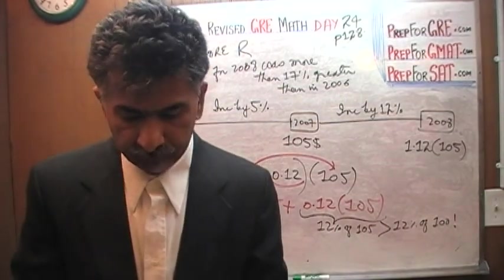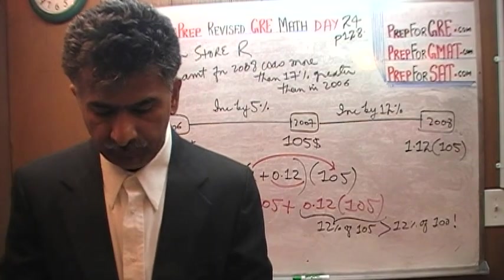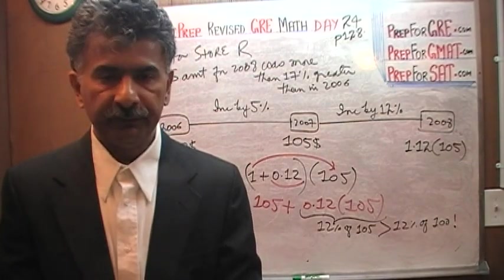B was not true. A was not true. Answer choice C is the only answer choice that works. Therefore, correct answer is C. C. That's all.